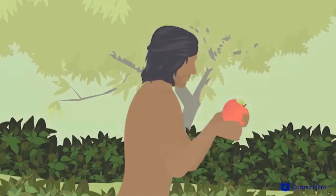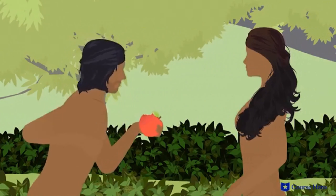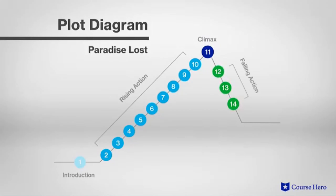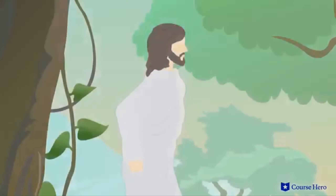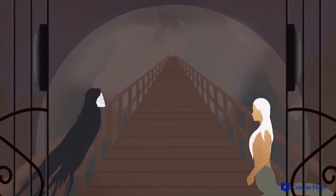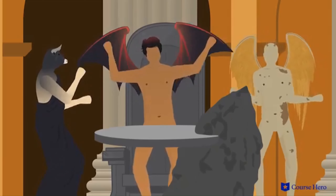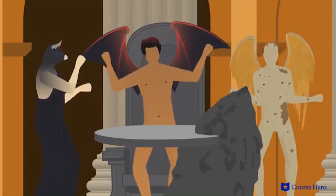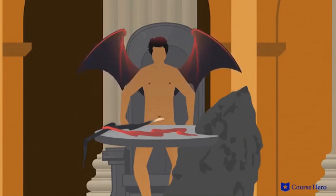After hesitating, Eve eats the fruit and then offers it to Adam. Though he realizes they are doomed, Adam eats the fruit so they will share the same fate. In the falling action, God is angry and sends the Son to the Garden of Eden to deliver his judgment: Eve and all women will experience pain in childbirth and must submit to their husband's will; Adam and all men will labor to grow food from cursed ground. Satan returns triumphant to hell, but the Son transforms him and all his followers into serpents, doomed to eternally hunger for fruit that turns to ashes.